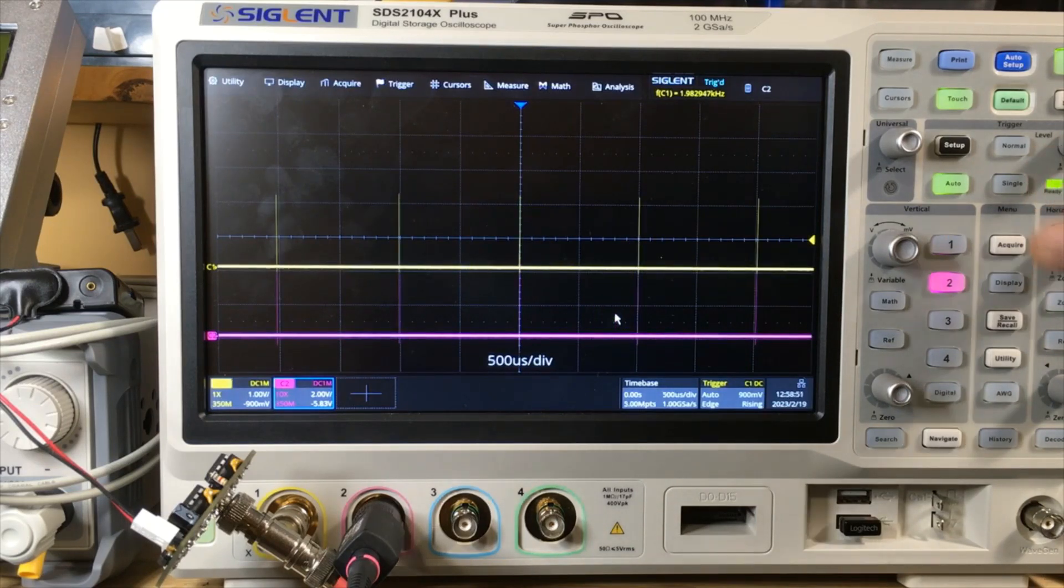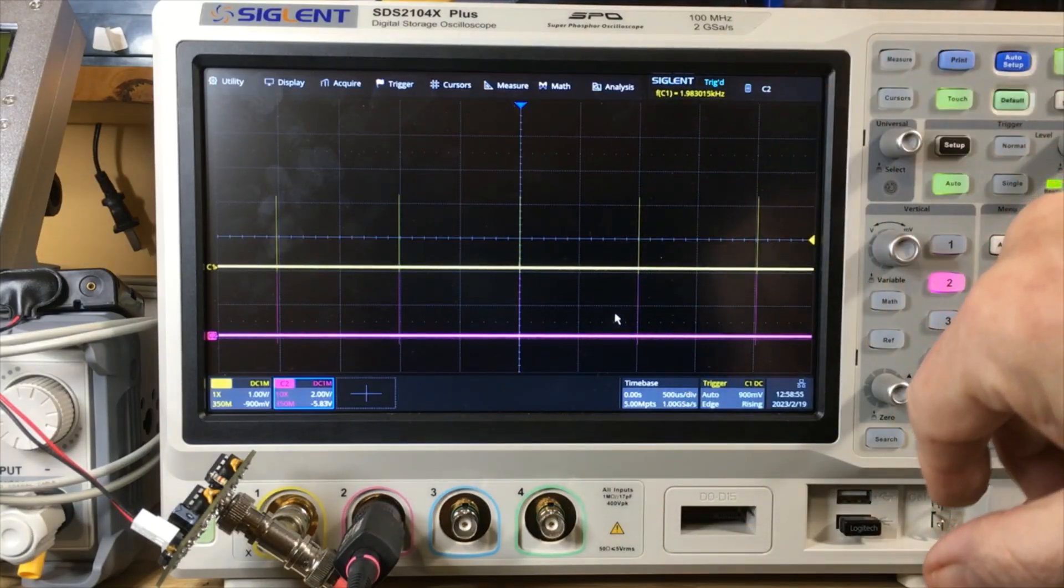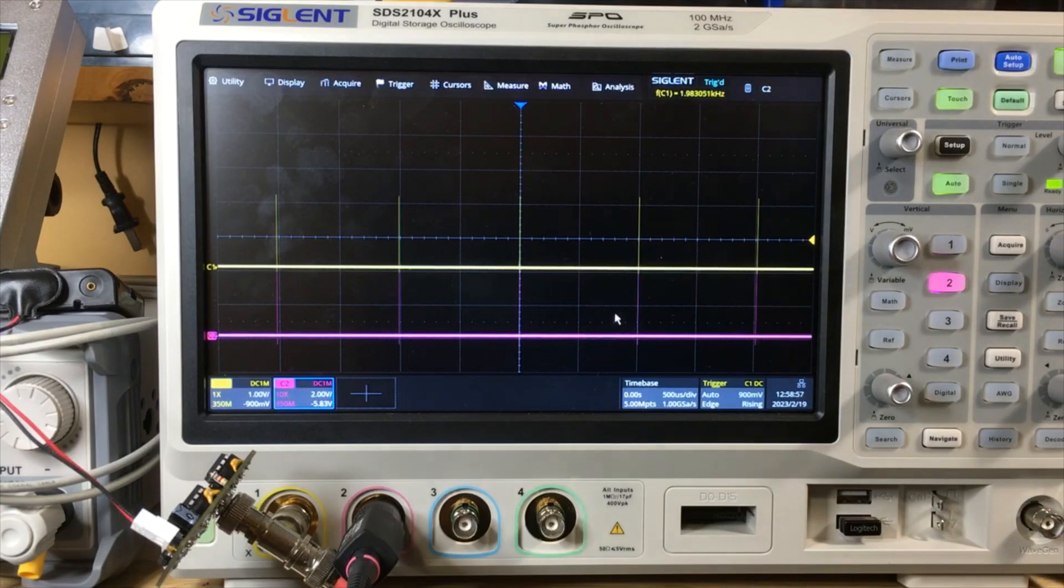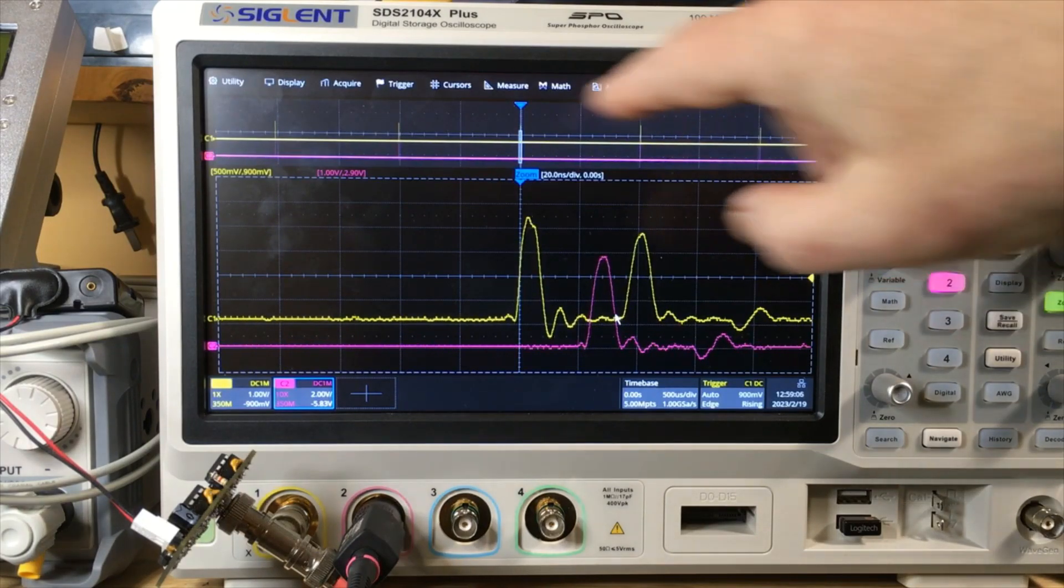Another way to do this would be the zoom function on this oscilloscope. Here we have our waveform, possibly two kilohertz, and we can't see a heck of a lot there. You can enter the zoom either by pressing on the horizontal control knob or on the zoom button like this.